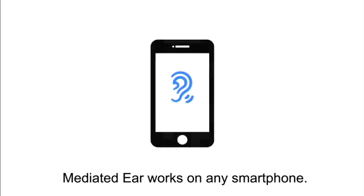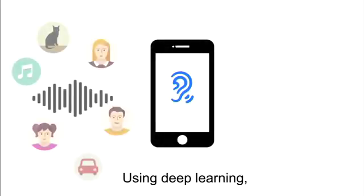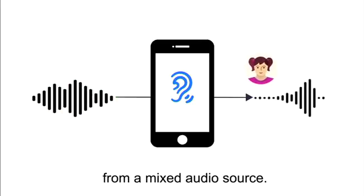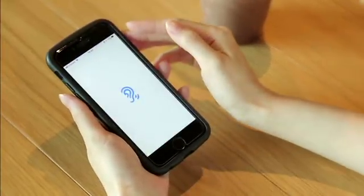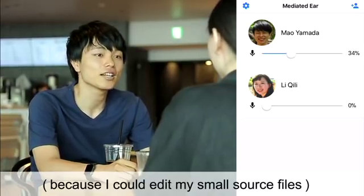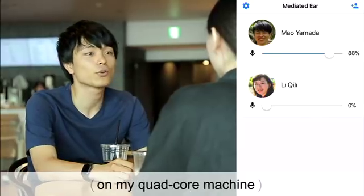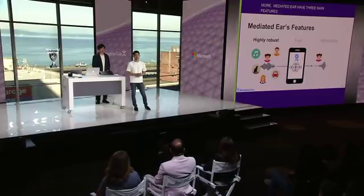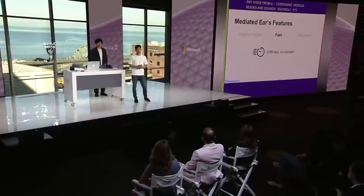MediaTDR works on any smartphone. Using deep learning, MediaTDR can isolate any voices from a mixed audio source. Using deep learning, it can extract any voice from a mixed audio source containing various noises and sounds. It takes just 0.06 seconds to process one second of audio. This enables users to communicate in real time. All you need is a smartphone and a pair of earphones. Since we use Azure, running cost is minimal.